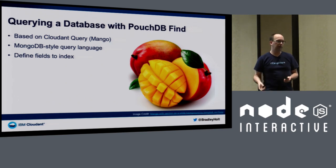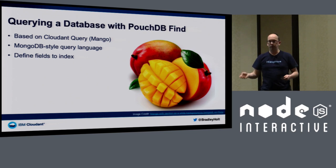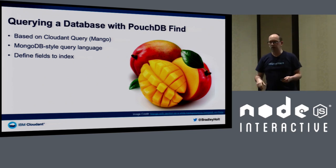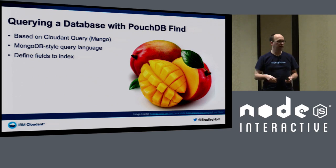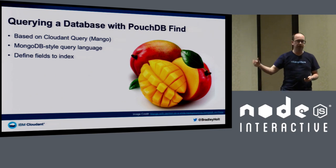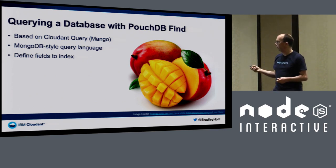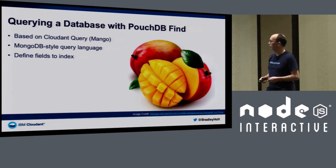PouchDB Find is based on Cloudant Query, which we open-sourced, and it was contributed to CouchDB, then ported to PouchDB by someone in the community. The basic idea is you can declaratively say: I want to query against this timestamp field, or this last name field — and it will create an index for you that you can then query against. If you're struggling with how to query PouchDB, PouchDB Find is probably the simplest way to work with it.